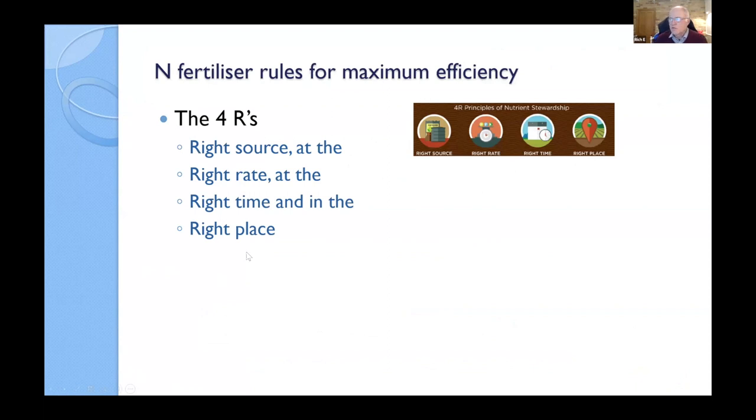Just a reminder of nitrogen use efficiency. The four R's for maximum nitrogen use efficiency are applying the right source of nitrogen at the right rate, at the right time and in the right place. If anything, what our latest research is showing is that the rate of nitrogen shouldn't be the same all year round. The plant can respond better at times of the year to more nitrogen and less at other times of the year. So we should be thinking of adjusting the rate for the time of the year.